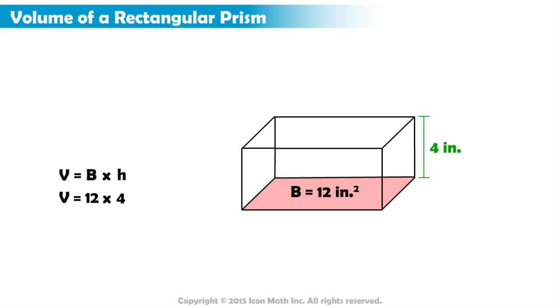Now, our formula reads as V equals 12 times 4. The product of 12 and 4 equals 48. So, the volume is 48.